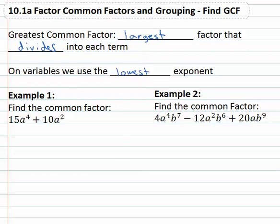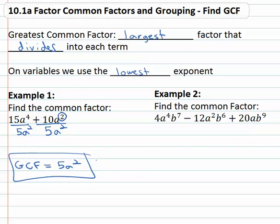So greatest common factor, we'll use the lowest exponent. We'll look at 15a to the fourth plus 10a squared. We want to know what we can divide the entire thing by. Looking at the numbers, we can divide 10 and 15 by the number 5. Looking at the variables, what they have in common is they all have at least two of the a's. Notice we're using the lowest exponent. We could divide both parts by 5a squared. So the greatest common factor of this polynomial is 5a squared. It's the largest thing we can divide each term by.